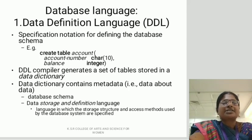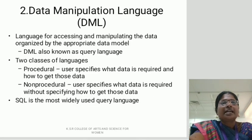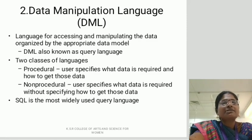Database languages. There are two types of database languages: DDL and DML. DDL, or data definition language, specifies the notation for defining the database schema. The DDL compiler generates a set of tables stored in a data dictionary. The data dictionary contains metadata — that is, data about data. It also consists of database schema and data storage and definition language.